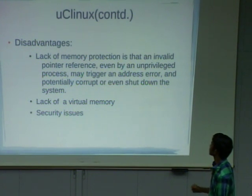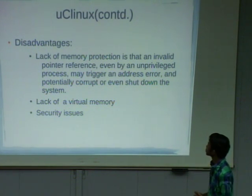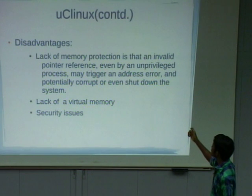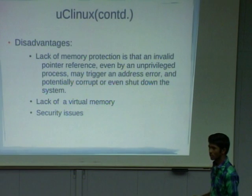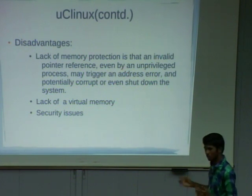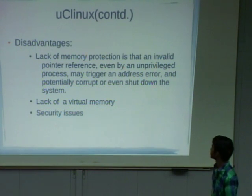Coming to the disadvantages of UC Linux. We are removing the memory management unit from hardware, so there are many issues regarding security. An unprivileged process can point to addresses allocated to kernel-related processes, meaning there is a chance to corrupt kernel-related processes, which may require a system restart or shutdown. These are the security-related issues. Another disadvantage is the lack of virtual memory.